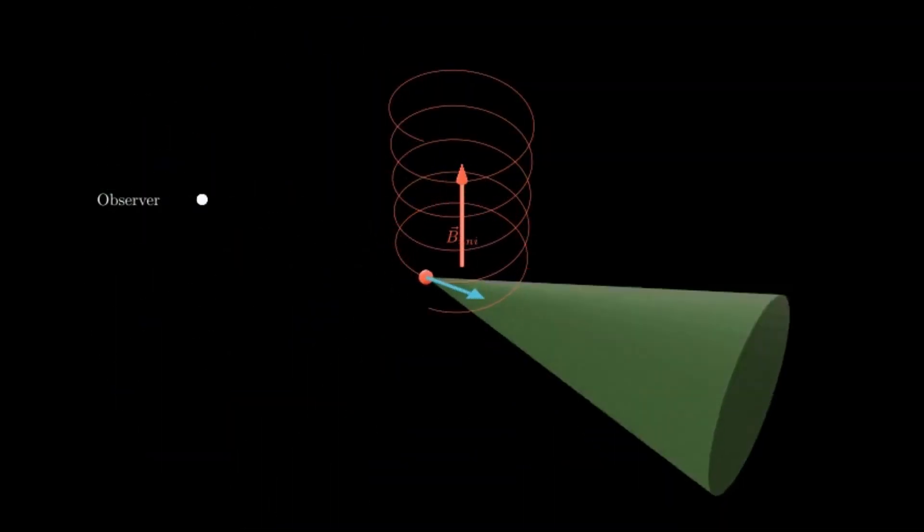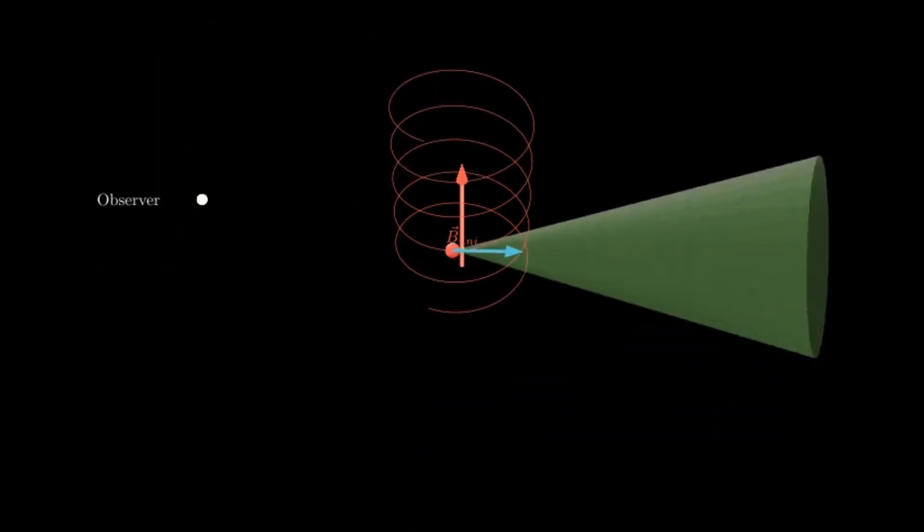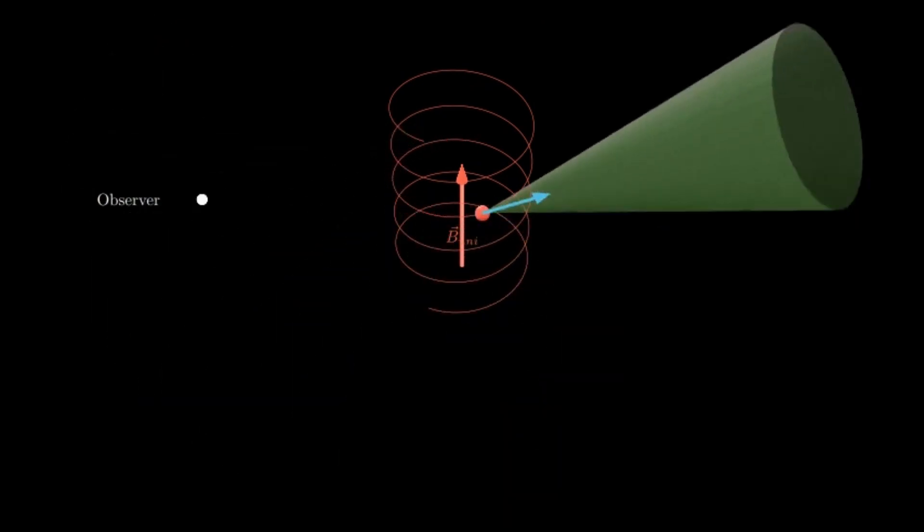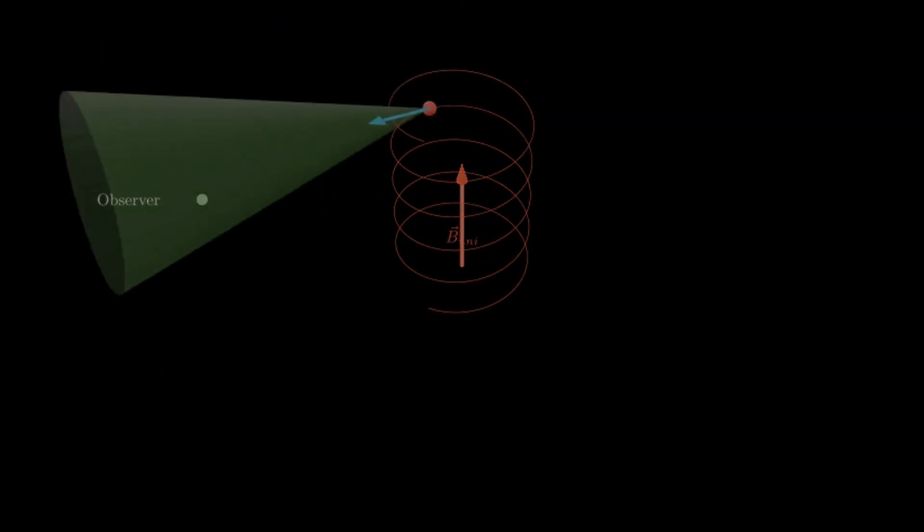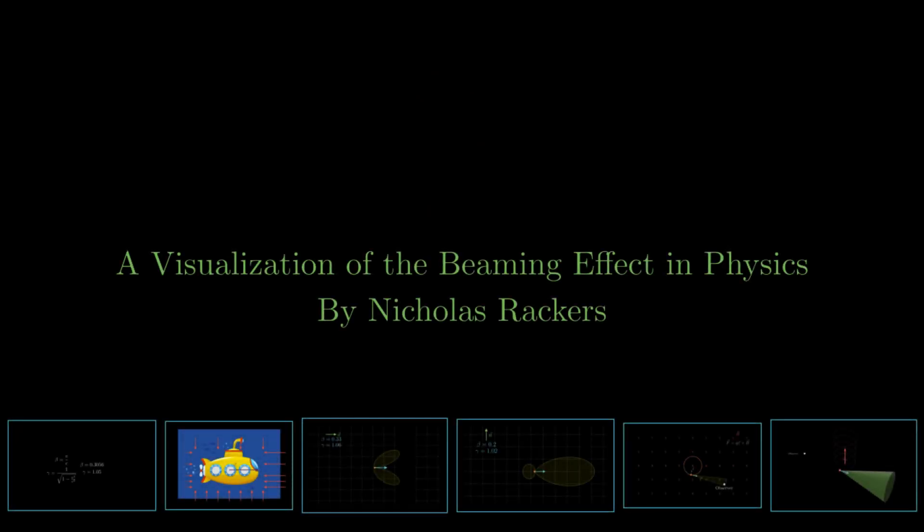Hopefully, the visualizations in this video have helped you to understand something about Einstein's relativity, and how relativistic motion can really warp the physics of what happens, and specifically how the beaming effect causes radiation to point towards the direction of motion.